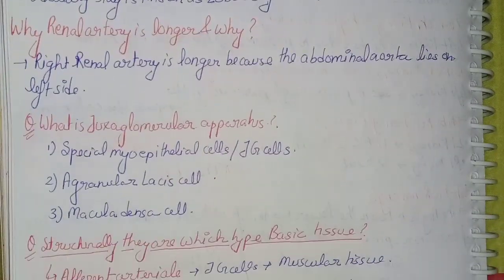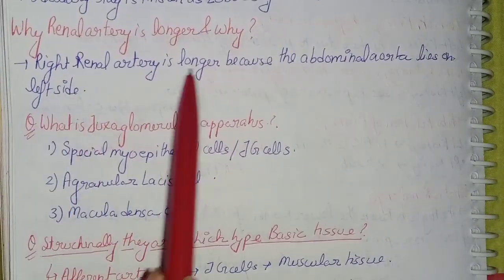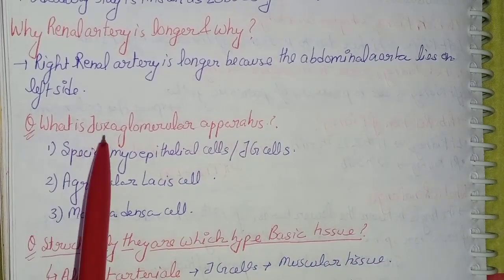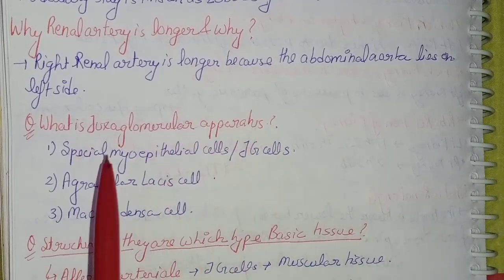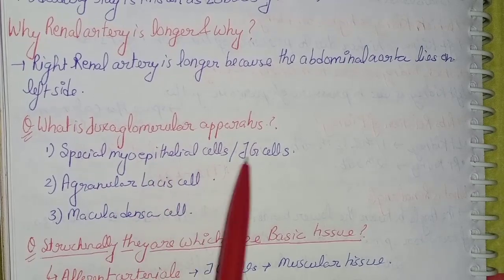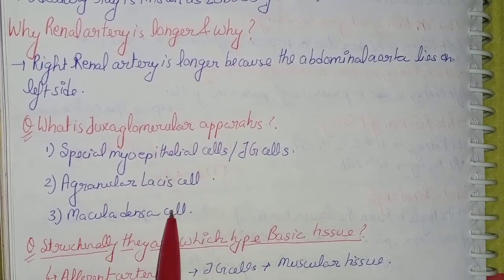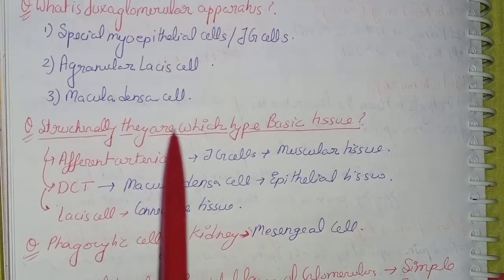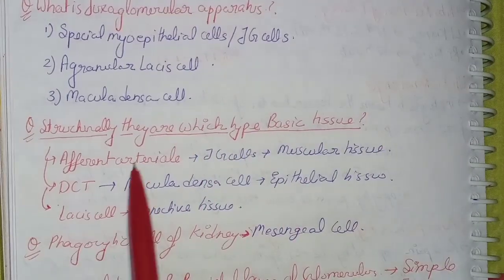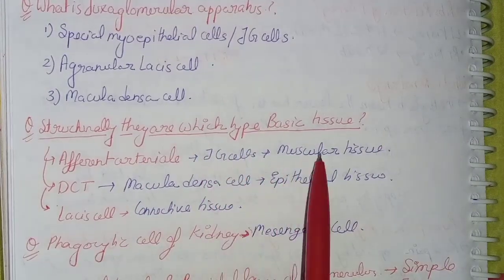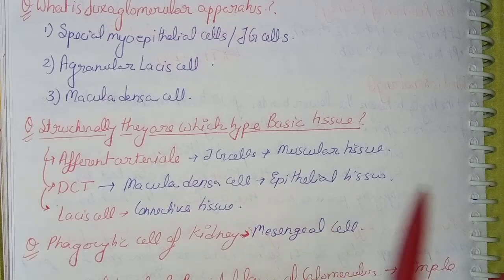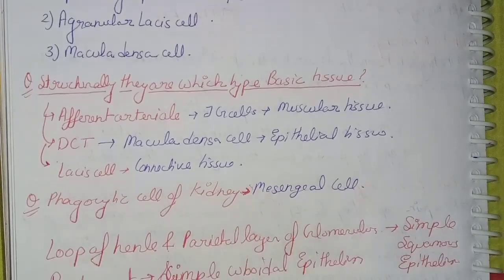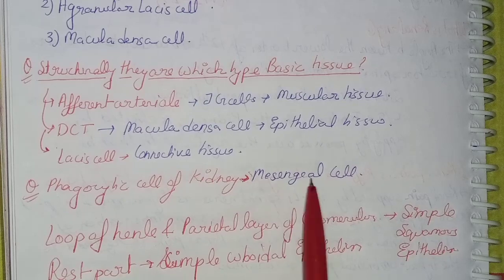Why is the right renal artery longer? Because the abdominal aorta lies on the left side. What is the juxtaglomerular apparatus? It is formed by special myoepithelial cells (JG cells), agranular (lacis) cells, and the macula densa. Structurally: the afferent arteriole and JG cells are muscular tissue; DCT (macula densa) is epithelial tissue; and lacis cells are connective tissue. The phagocytic cell of the kidney is the mesangial cell.